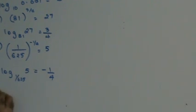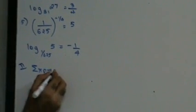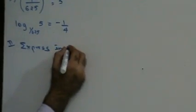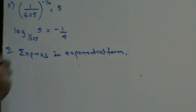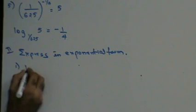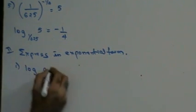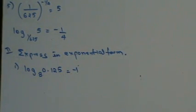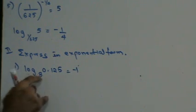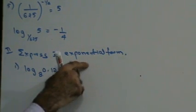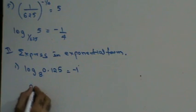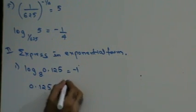Let's do the reverse of this — express in exponential form. Suppose if I have log of 0.125 to the base 8. If I express this in exponential form, the base goes on the right-hand side and the number on the right-hand side goes in the index. This would be: 0.125 is 8 raised to minus 1.